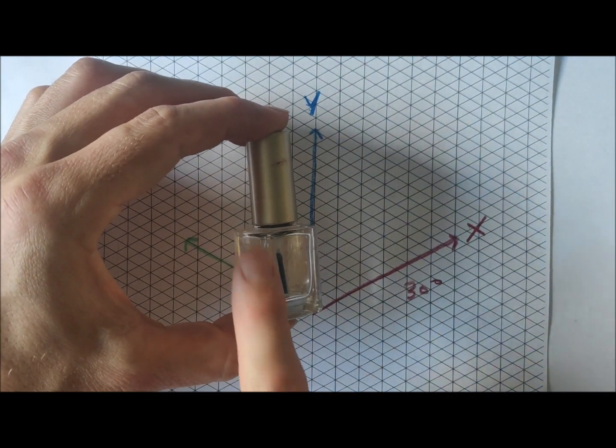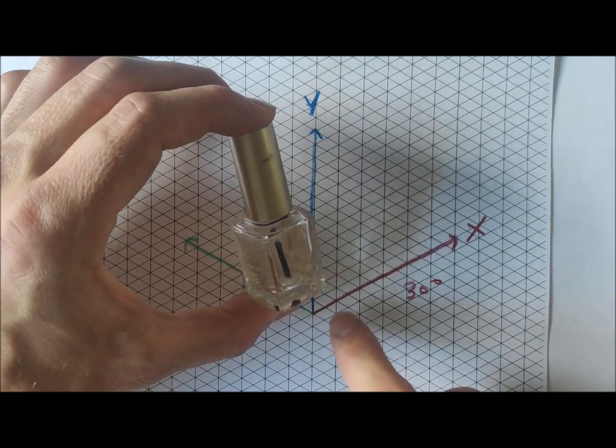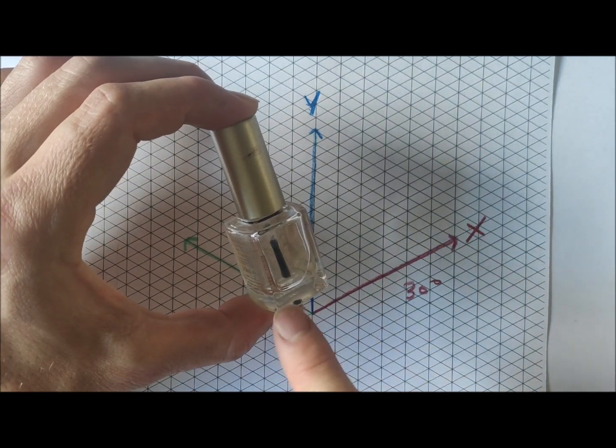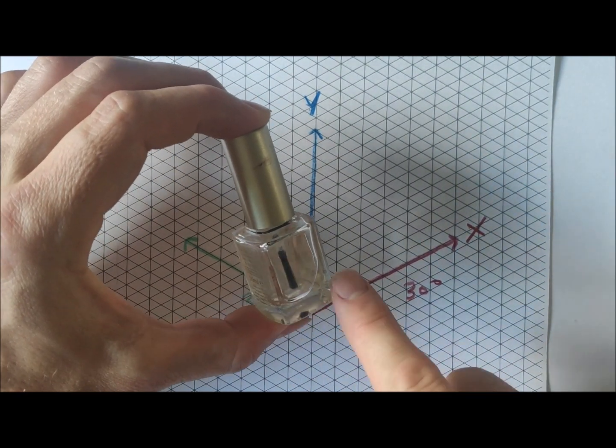So the edge of this bottle here is the y-axis, or on the y-axis, and our x-axis there is going across, so it's showing these two axes here.